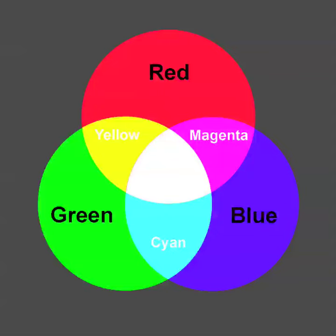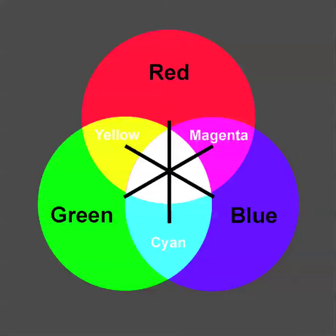Before we leave this presentation, let's point out a relationship that is also important to understand: colors that are directly opposite each other — for instance, red and cyan — that's called a complementary pair of colors. We have three complementary pairs of colors: yellow and blue, green and magenta, and red and cyan.